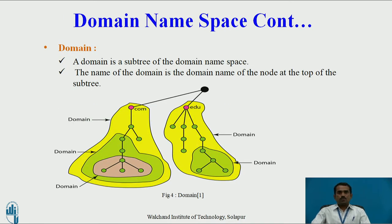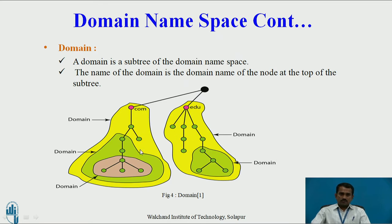Domain namespace: a domain is a subtree of the domain namespace. The name of the domain is the domain name of the node at the top of the subtree. This diagram contains different domains. This is a root server, and these are the different domains — there are two domains: .edu (educational) and .com (commercial). Under .edu, there is one more subdomain. The green part indicates a separate domain. There are three domains here — each is a separate domain — and subdomains exist under the main domains, which are .com and .edu.